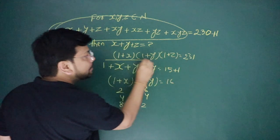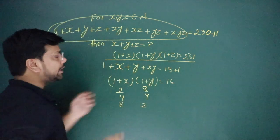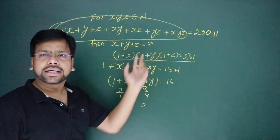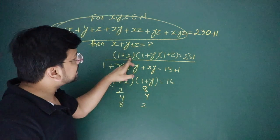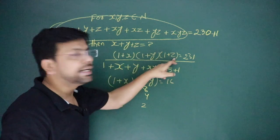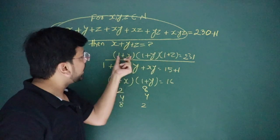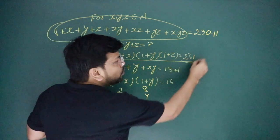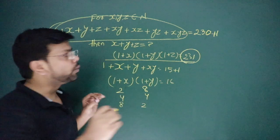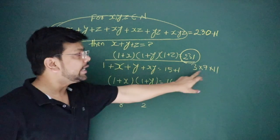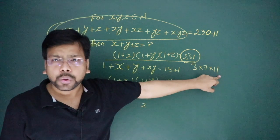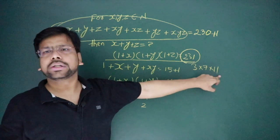And I know that it's a natural number, so each bracket is two or more. Why? Because natural number is one. If X is one, Y is one, Z is one, the smallest bracket is two or more. And if you factorize, you can see it's just three into seven into eleven.